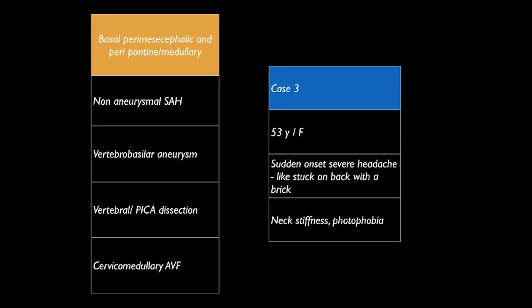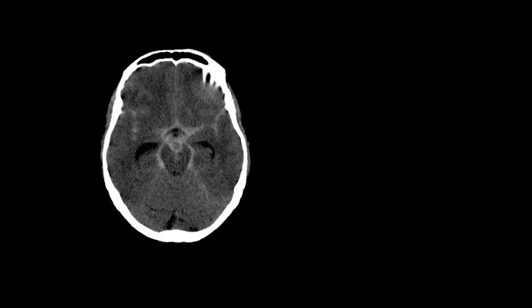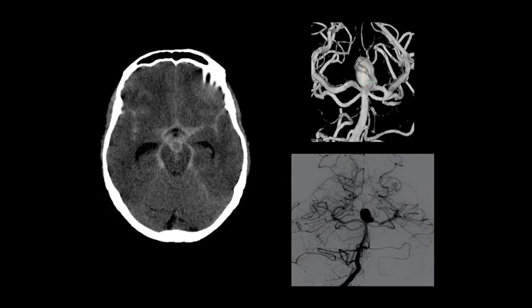Pattern two: posterior fossa bleed in basal perimesencephalic and peripontine perimedullary cisterns. Case: a 53-year-old female with sudden onset severe headache, neck stiffness, and photophobia. CT head showed a well-defined rounded hypodensity within the subarachnoid blood in the interhemispheric fissure — the 'ghost sign', representing the ruptured aneurysm surrounded by adjacent blood — with associated hydrocephalus. DSA confirmed the aneurysm, which was treated with coiling.